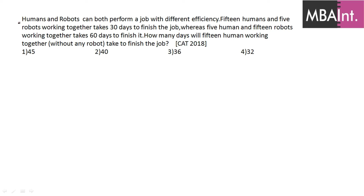The first question says that humans and robots can perform a job with certain efficiency. There are 15 humans and a certain number of robots which complete the job in 30 days, and again there are 5 humans and some robots which complete it in 60 days. The question asks how many days 15 humans alone will take.